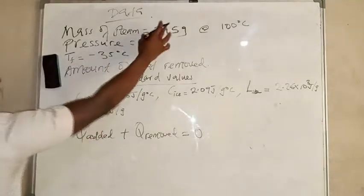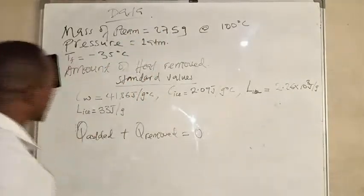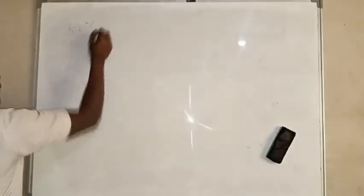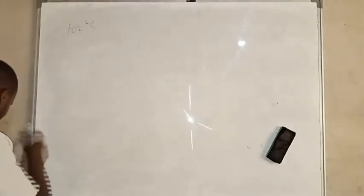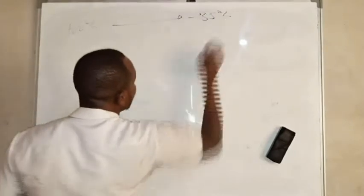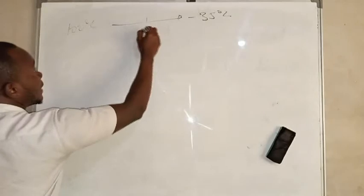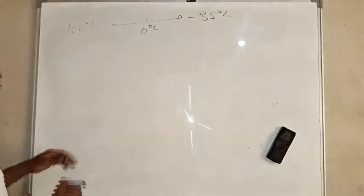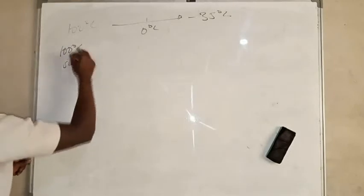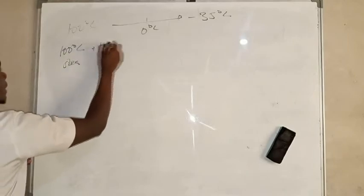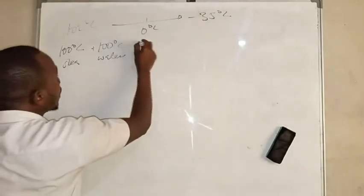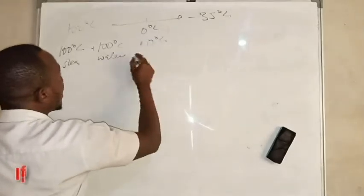Now let's look at the changes of state taking place. We go from 100 degrees Celsius down to negative 35 degrees Celsius, passing through zero degrees Celsius in the middle. Starting at 100 degrees Celsius we have steam, and when it condenses we have water at 100 degrees Celsius.